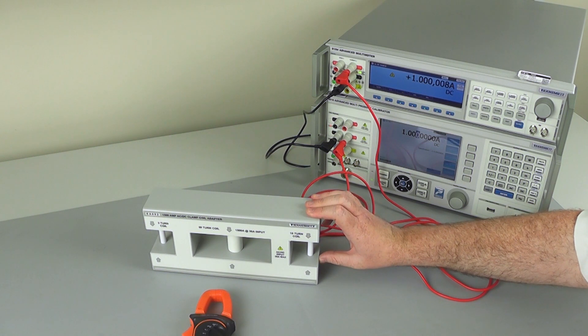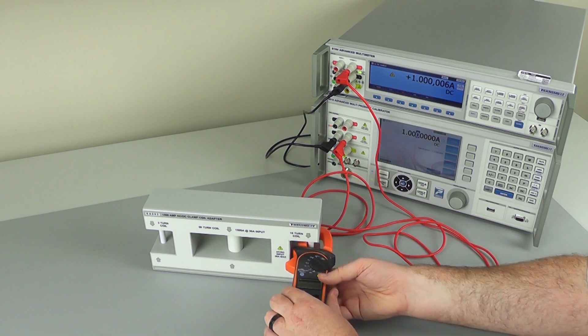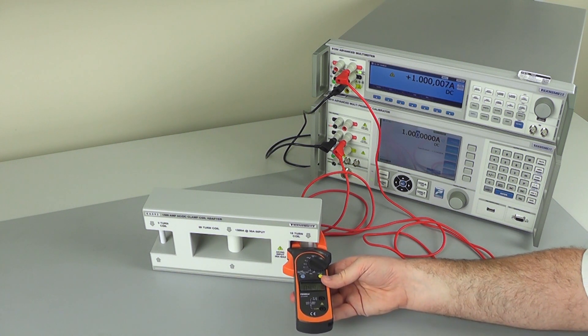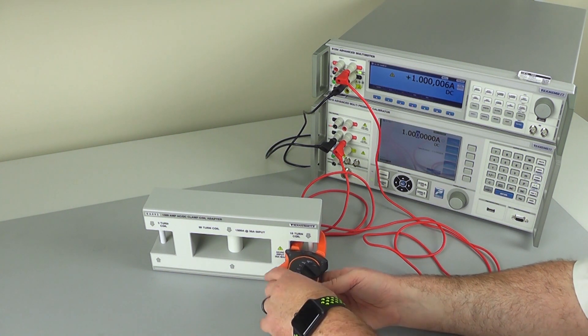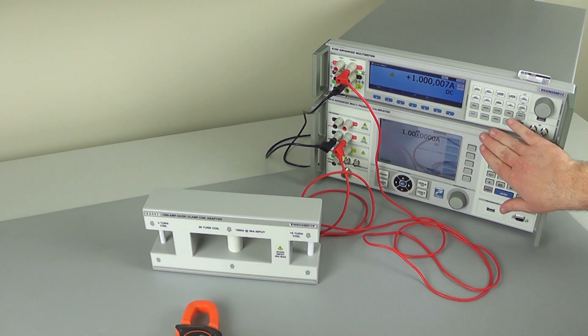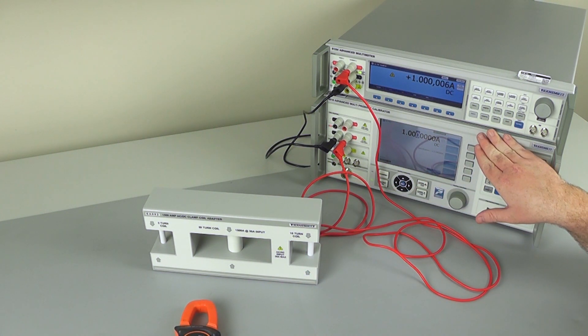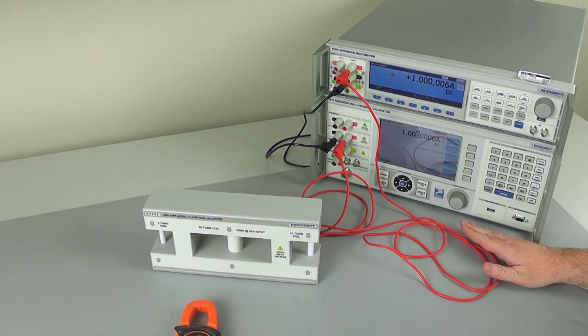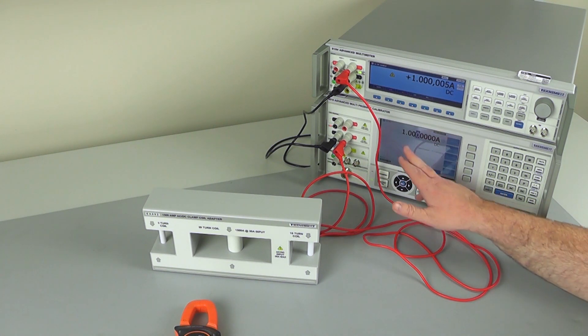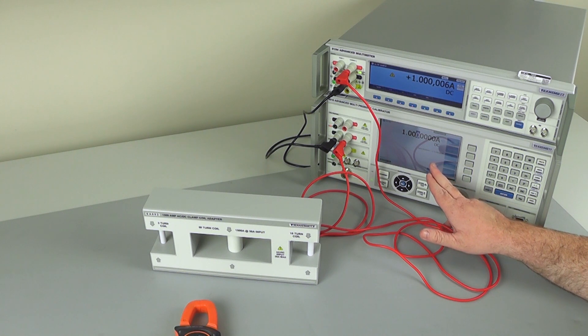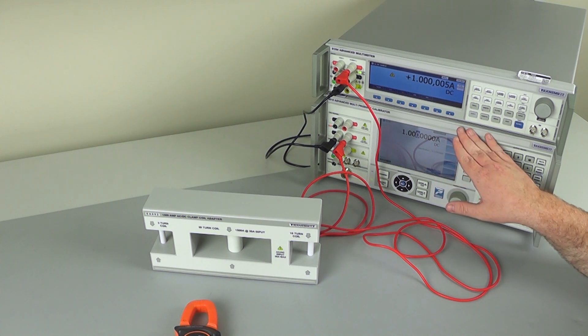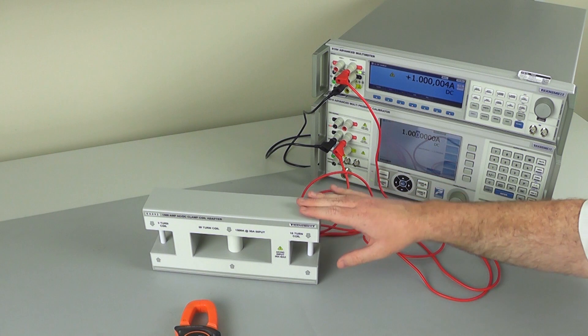The factors which do change will be the alignment of the clamp meter, which is reduced using the Transmill design, and the actual current being delivered by the source. So if you switch to AC and start increasing the frequency, that will be harder for the calibrator to drive. And you may see either an increase in the current or a decrease as the feedback starts to lose control of the outputs. But this is down to the current source behind the coil, not the coil itself.